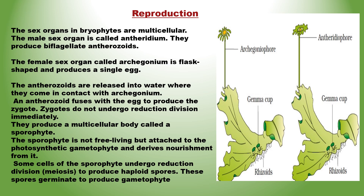Bryophytes में Sex Organs Multicellular होते हैं। Male Sex Organs को Antheridium कहते हैं, जो Biflagellate Antherozoids उत्पन्न करता है। Female Sex Organs को Archegonium कहते हैं। यह Flask-shaped संरचना होती है तथा Single Egg उत्पन्न करती है। Antherozoids पानी में निकलते हैं, जहाँ यह Archegonium के संपर्क में आते हैं। एक Antherozoid Egg के साथ मिलकर Zygote बनाता है।